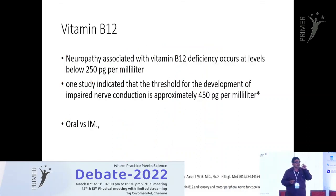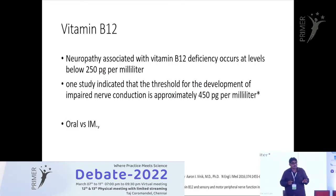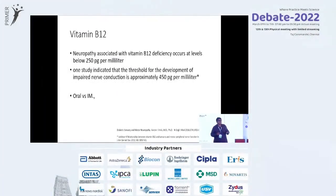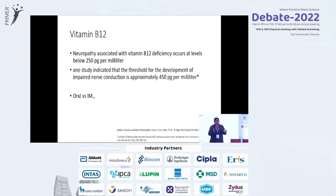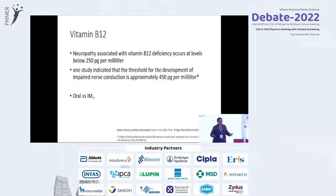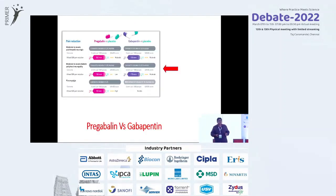Vitamin B12 supplementation is important — levels below 200 or 150 may warrant treatment. In diabetic neuropathy, oral B12 may not work well because metformin competitively inhibits B12 absorption in the small intestine. Give injectable B12 — alternate days, once a week, or twice a week — for a definite course of about 10 doses, to ensure neuropathy is not worsened by B12 deficiency.